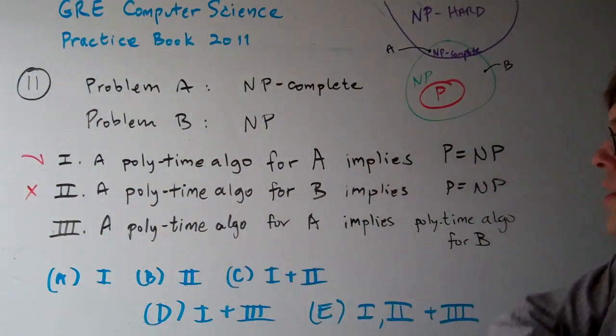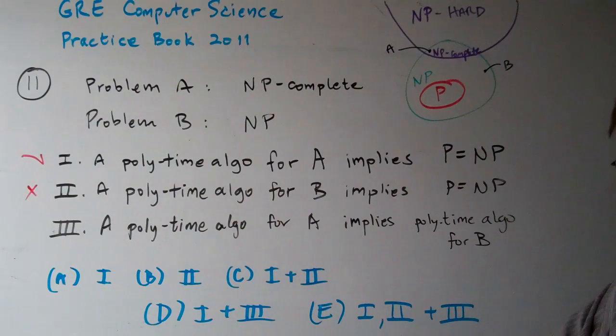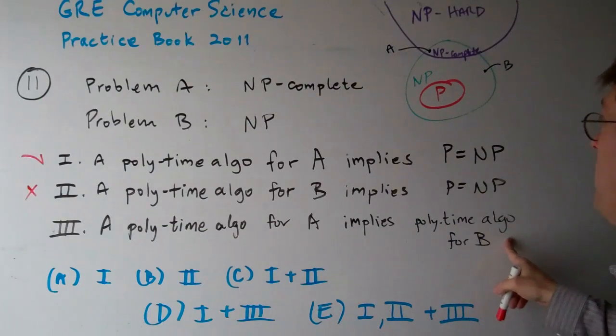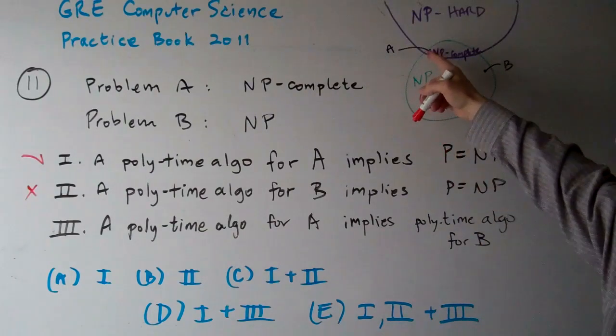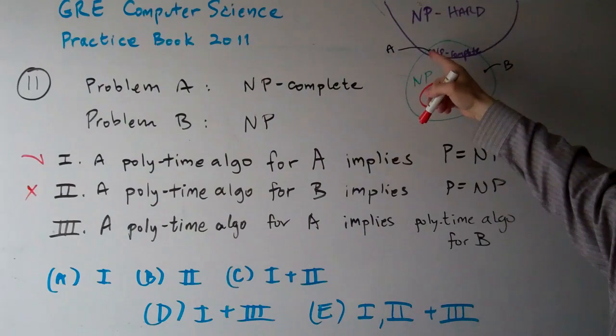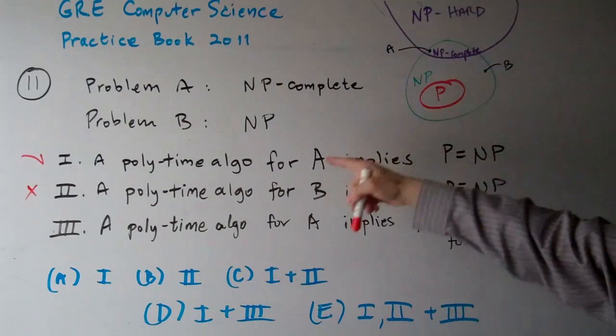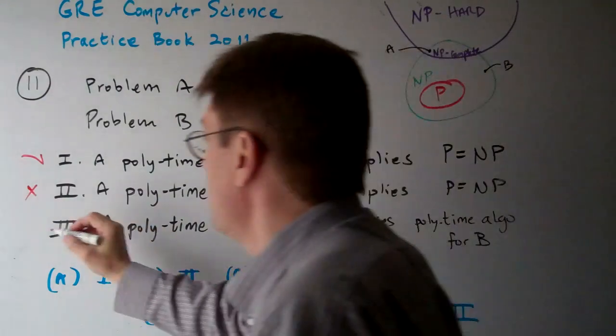And then three, a polynomial time algorithm for A implies that there's a polynomial time algorithm for B. Well, if there is a polynomial time algorithm for A, then there's going to be a polynomial time algorithm for all of these. We just talked about that here. So, that's going to be true.